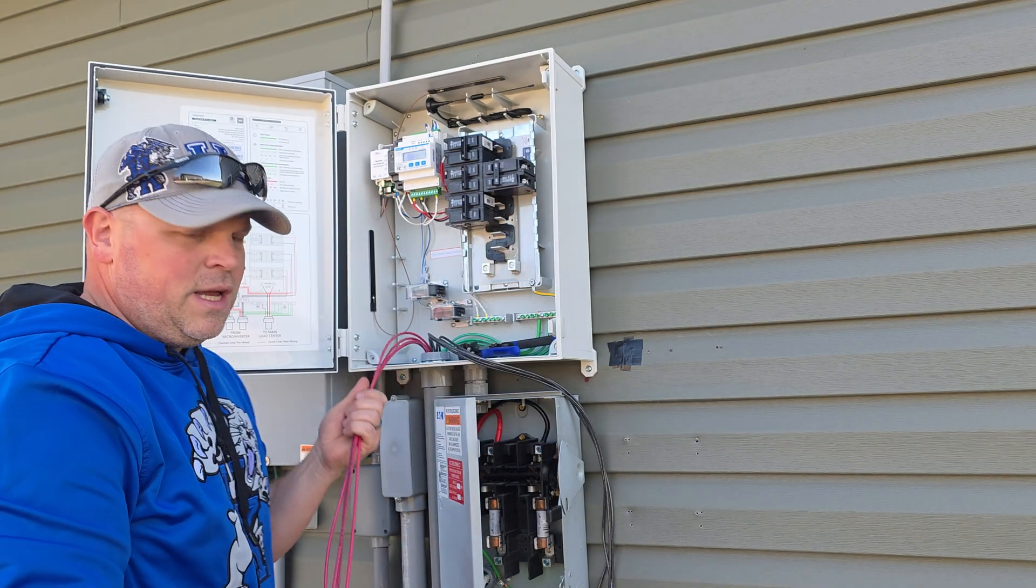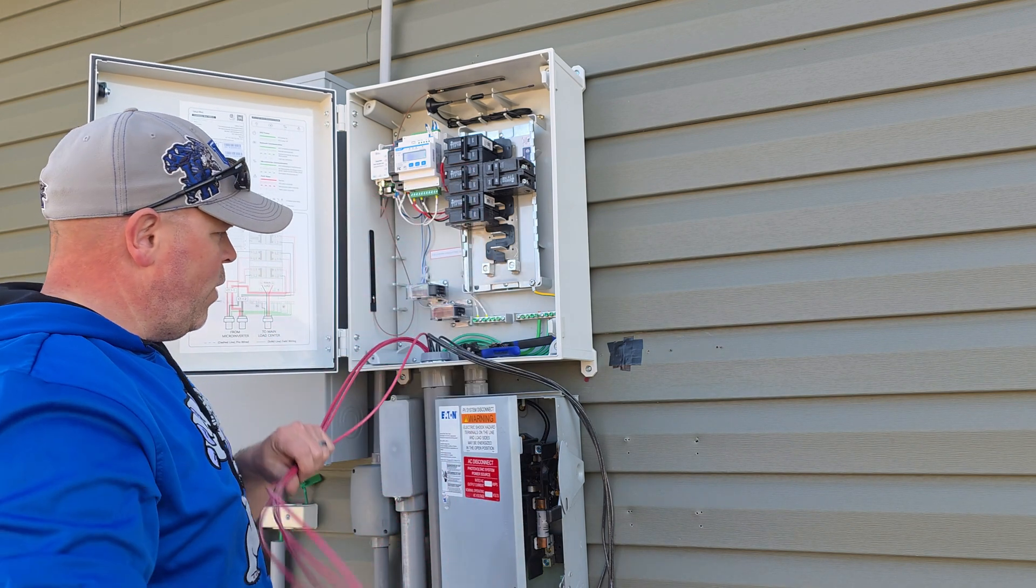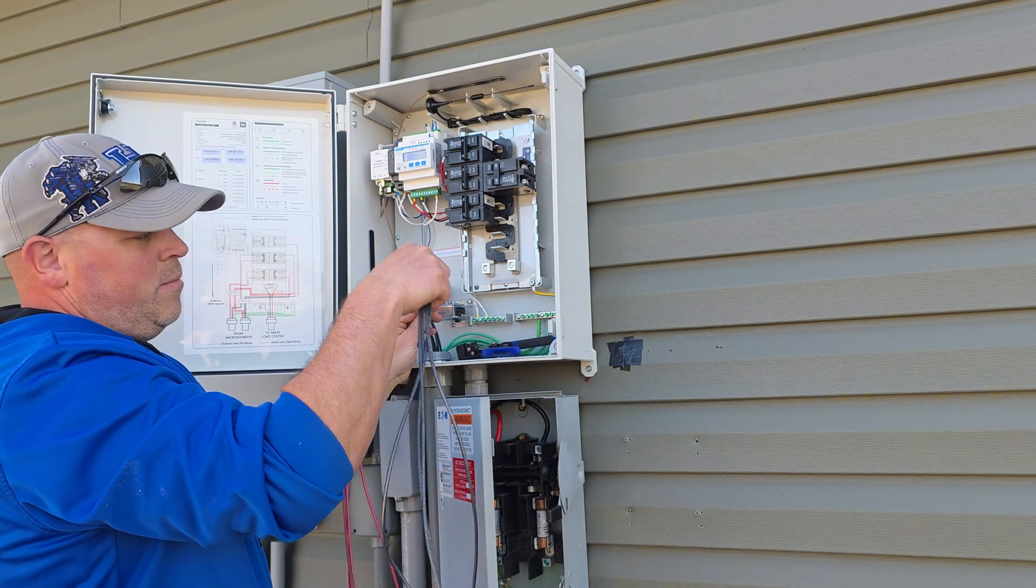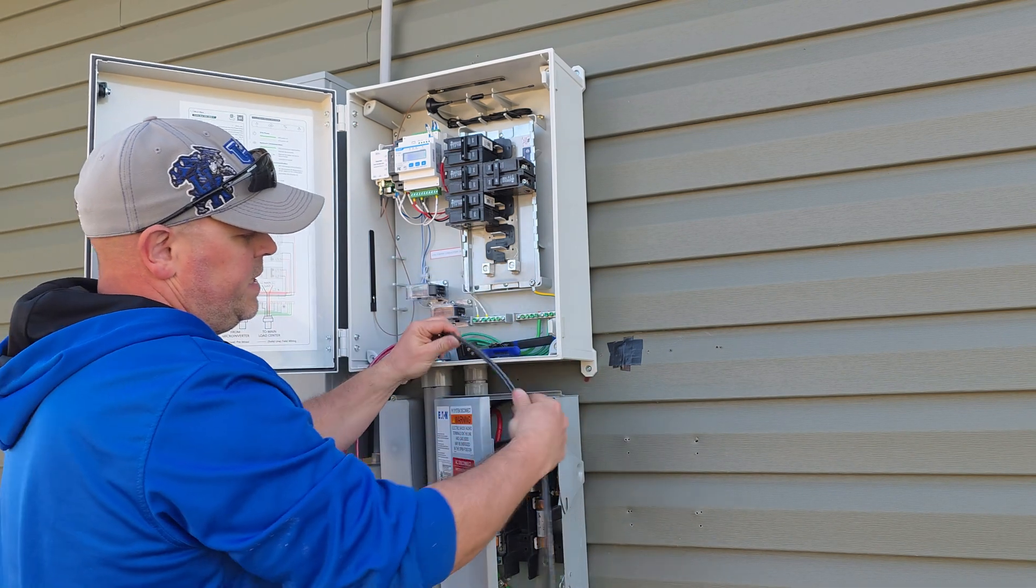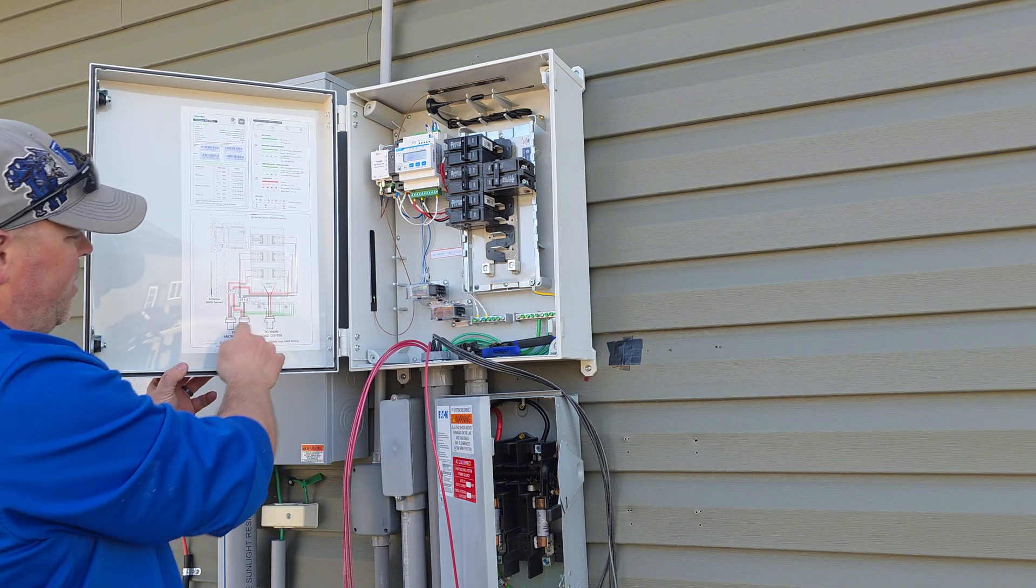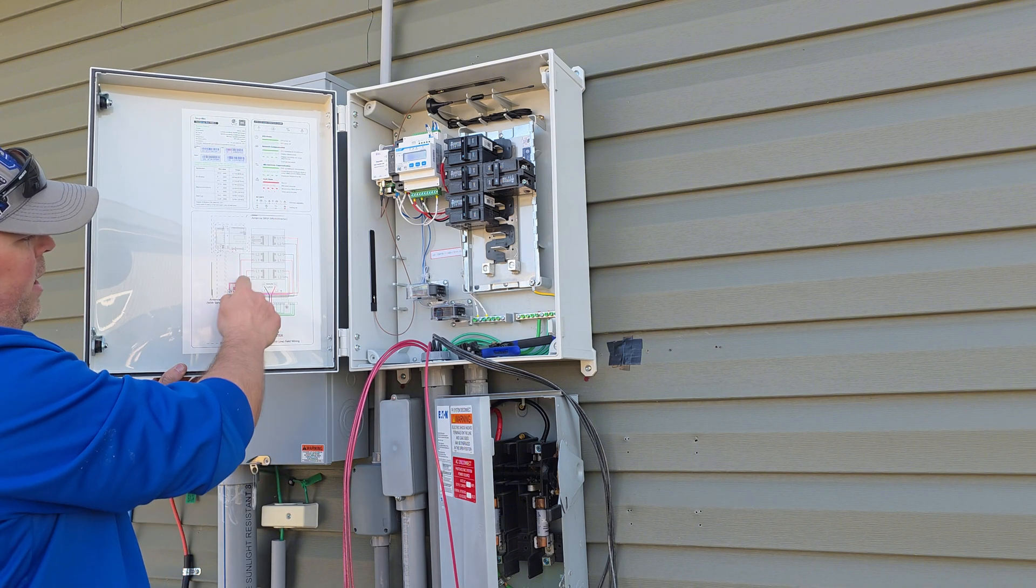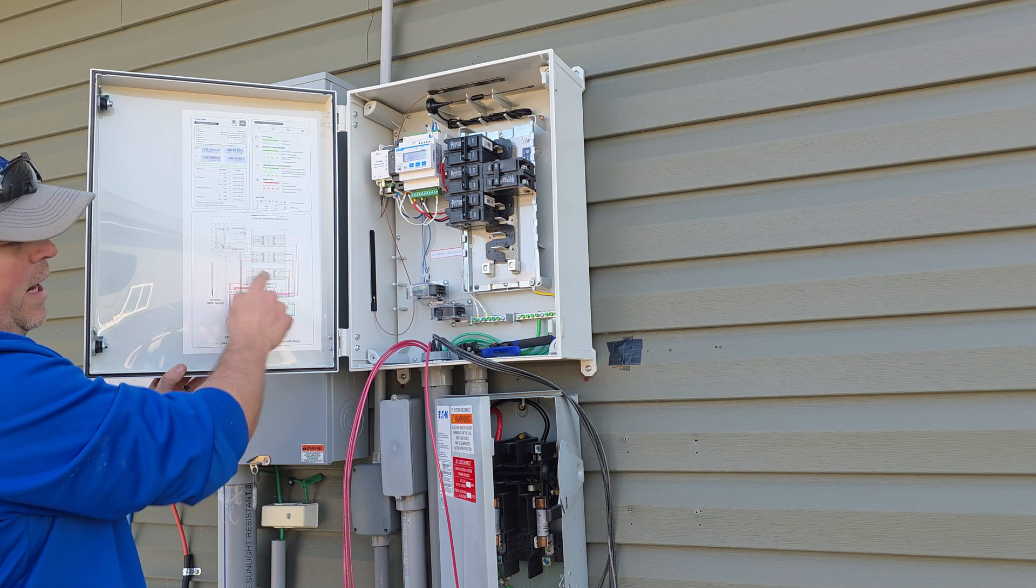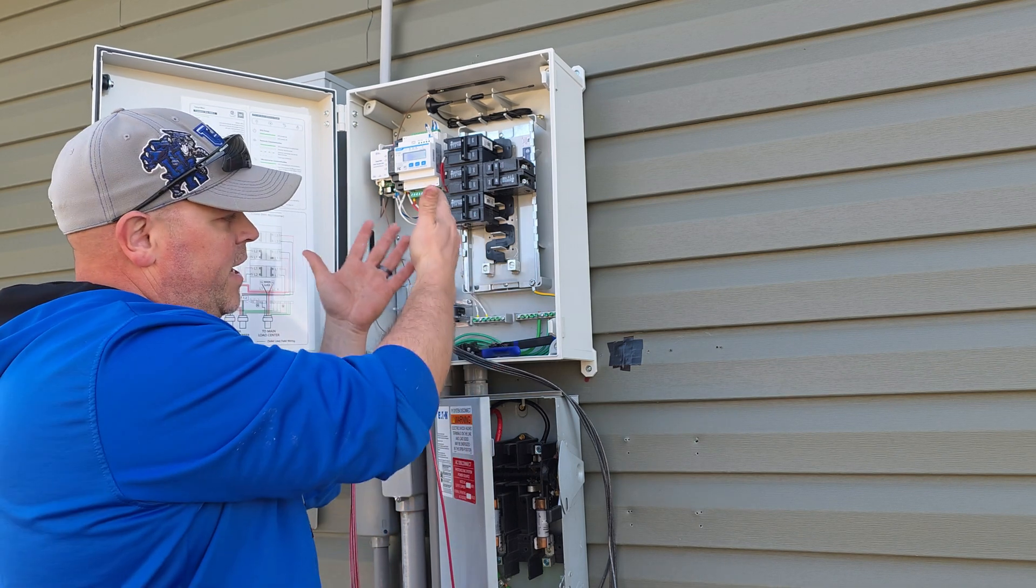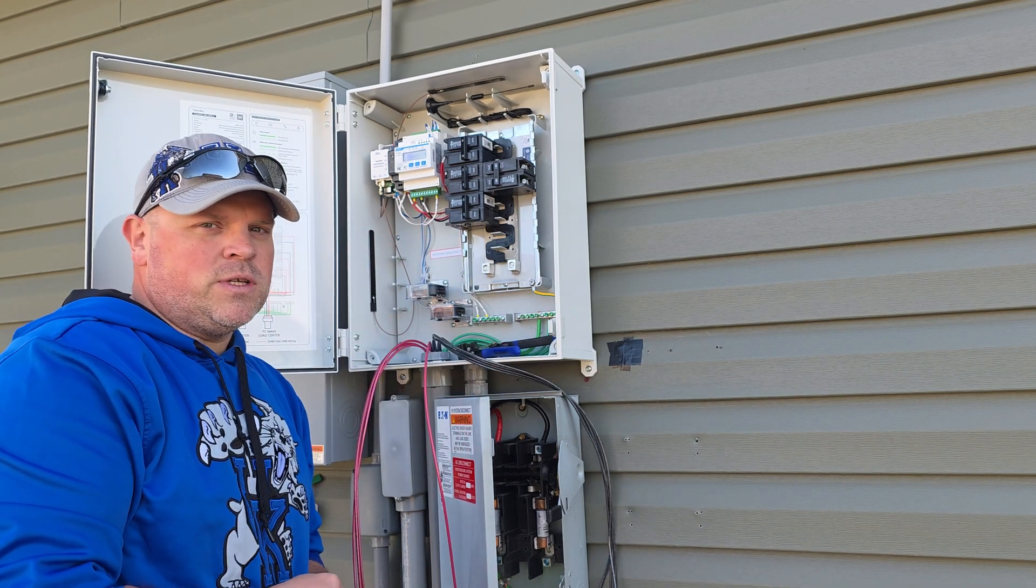Now, it's very important that you run your red wires through your CT1 and your black wires through CT2. That's identified right here on the panel box. These are your L1s and these are your L2s. So you have an L1 and L2 and you're just creating a 240 volt system.